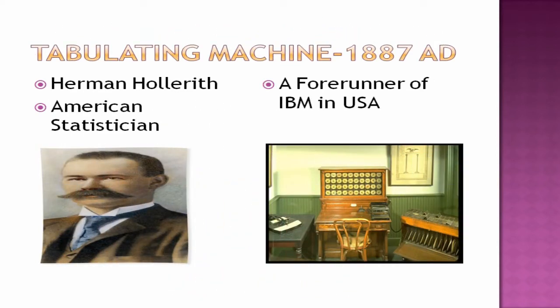Next comes the Tabulating Machine. It is a forerunner of IBM — International Business Machine — in the USA. It was developed in 1887 AD by Herman Hollerith, an American statistician.